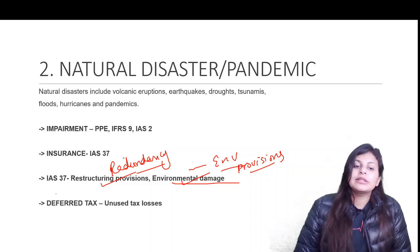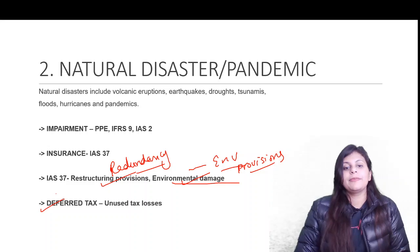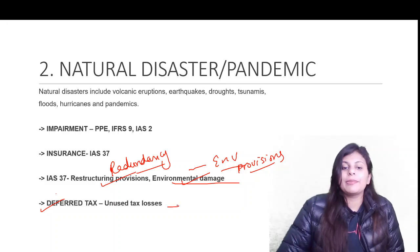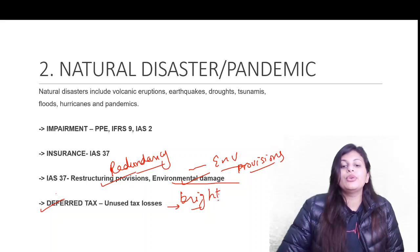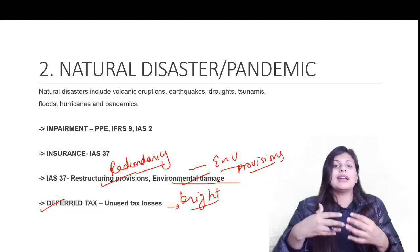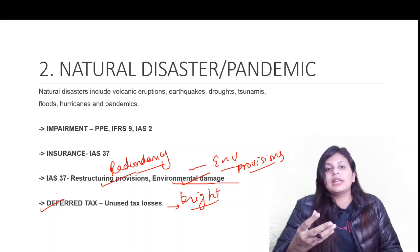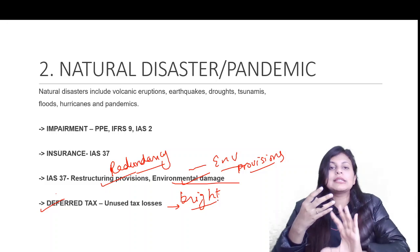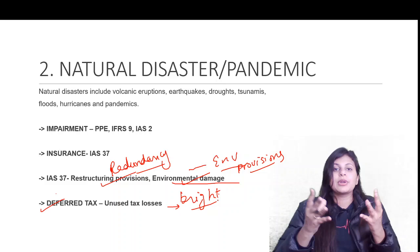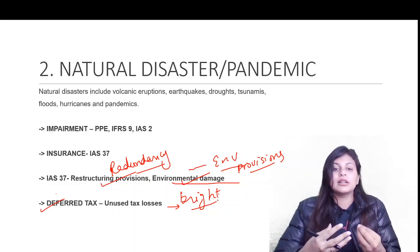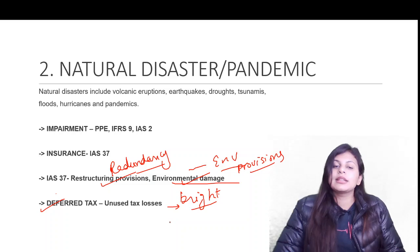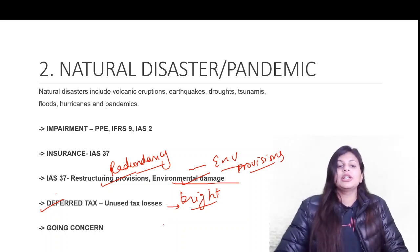Deferred tax is also affected by natural disasters. When we create a deferred tax asset on carried-forward losses, we need a bright upcoming future — sufficient future profits against which we can set off the unused tax loss. If profits will not be there due to the disaster, there is no point creating a deferred tax asset. We must assess whether there is strong evidence that we will make profits in the future before recognizing the deferred tax asset.